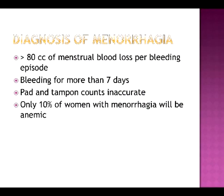Menorrhagia is diagnosed as greater than 80 cc's of menstrual blood during one menstrual period, or a single bleeding episode that lasts more than seven days. It can be difficult to assess how much menstrual blood is lost during a bleeding episode, as pad and tampon counts are notoriously inexact.